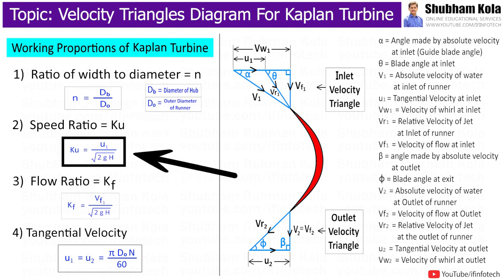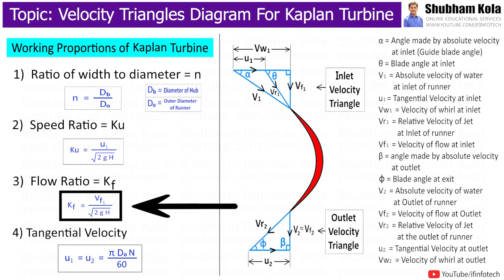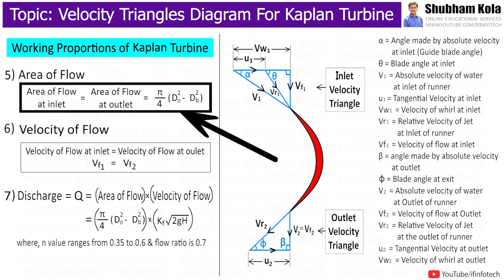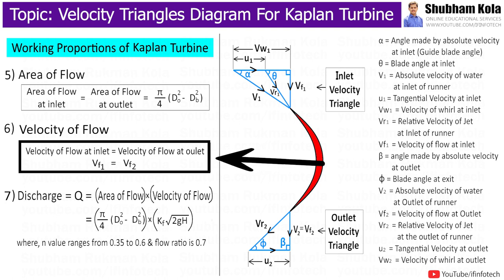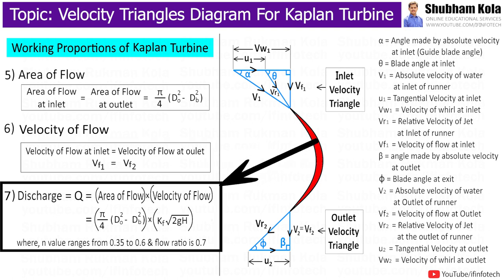The speed ratio is the ratio of tangential velocity at inlet to the theoretical jet velocity, called spouting velocity, that is √(2gH). The flow ratio is the ratio of velocity of flow at inlet to the spouting velocity, and its value is 0.7. For Kaplan turbine, the area of flow at inlet equals area of flow at outlet, given as π/4 × (D_o² − D_b²). The velocity of flow at inlet and outlet is the same, Vf1 = Vf2. Discharge through the runner is Q = π/4 × (D_o² − D_b²) × Kf × √(2gH), where Kf is the flow ratio equal to 0.7.